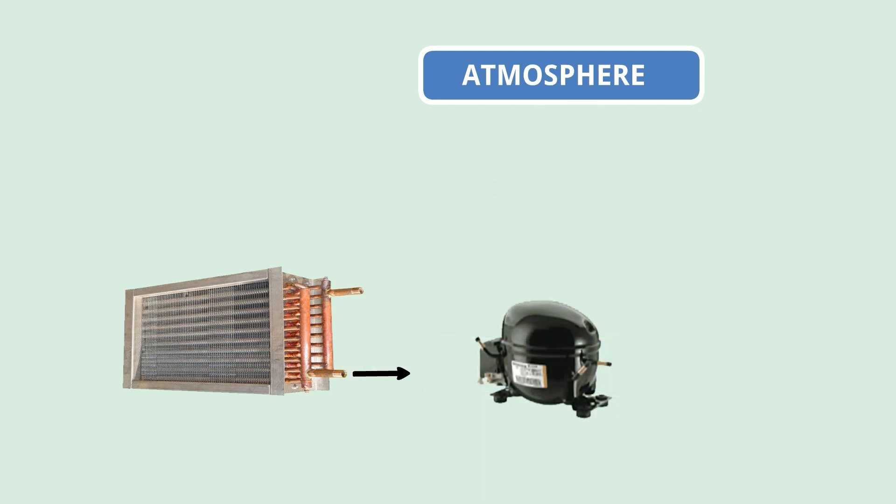This is the evaporator outlet. The temperature is less. Now we have to remove the heat to the atmosphere. So here comes the compressor. It increases the temperature and pressure of the refrigerant. Basically it increases the temperature differential and helps to remove the heat. Compressor will not remove the heat, but it will help to remove the heat.